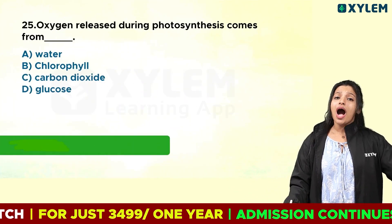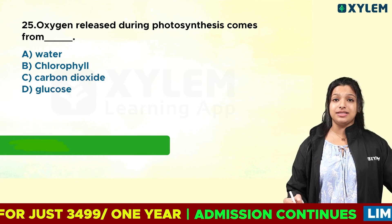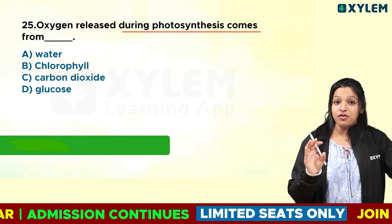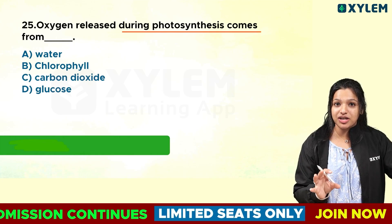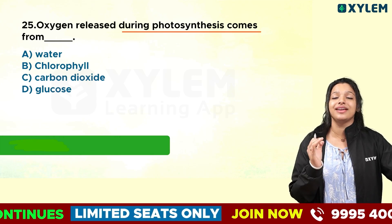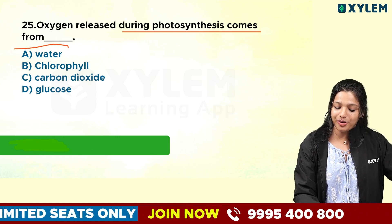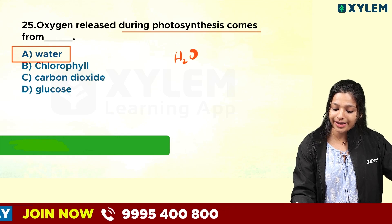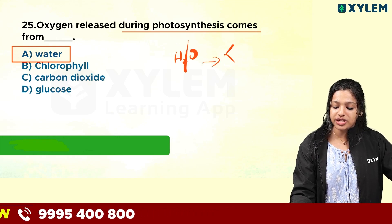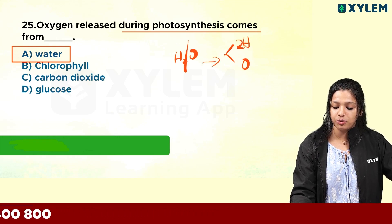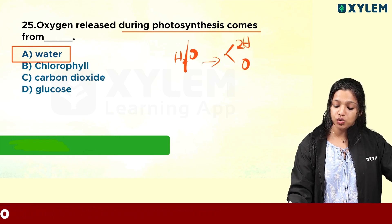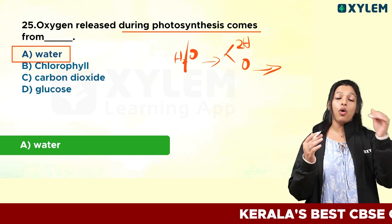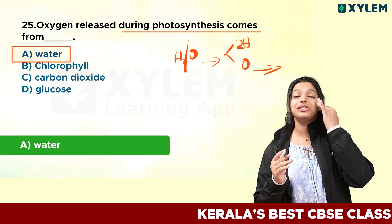Oxygen released during photosynthesis comes from what? In photosynthesis, oxygen is released. We need water because we split water — after splitting, we need hydrogen and oxygen. That is why we get oxygen from water during photosynthesis.